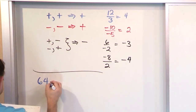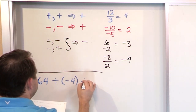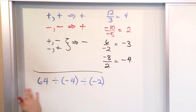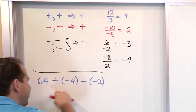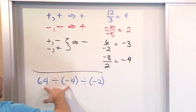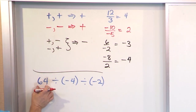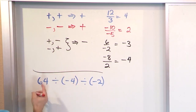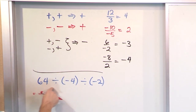What if we have 64 divided by negative 4, and then divide that again by negative 2? We look inside the parentheses and can't do anything there, so we look for multiplication and division and go left to right. First, we focus on 64 divided by negative 4. That's positive divided by negative, so because of different signs, we get a negative. 64 divided by 4 is 16, so we get negative 16.